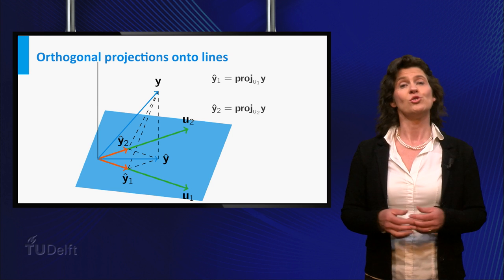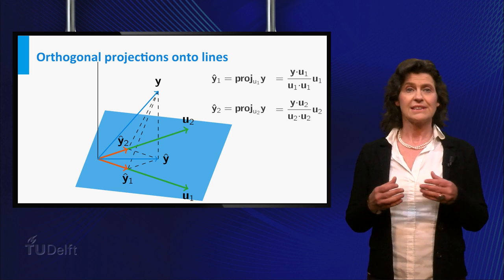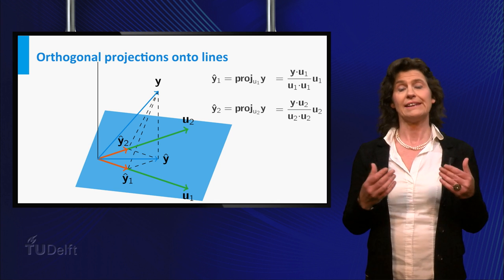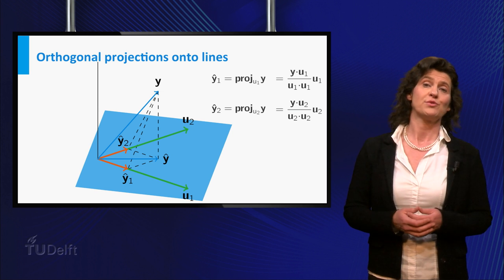Then you know that Y1 hat is equal to the vector U1 scaled by the inner product of Y and U1 divided by the inner product of U1 with itself. And similarly for Y2 hat.